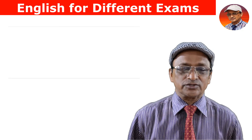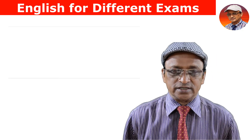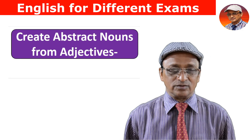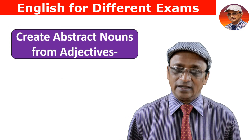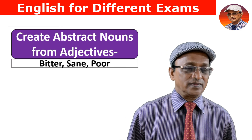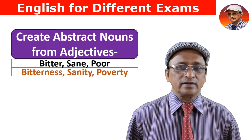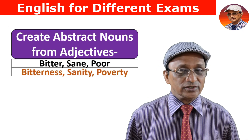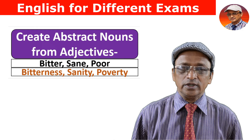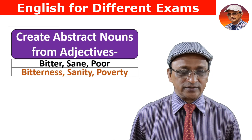Now let's create abstract nouns from adjectives. 'Bitter' is an adjective; 'bitterness' is the noun. 'Sane' is an adjective; 'sanity' is the noun. 'Poor' is an adjective; 'poverty' is the noun.